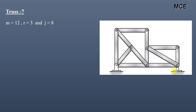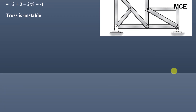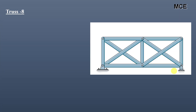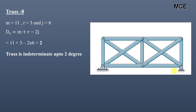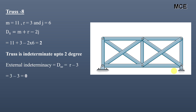For truss seven, this truss has 12 members, 3 reactions, and 8 joints. ds = −1, so this truss is unstable. For truss eight, this truss has 11 members, 3 reactions, and 6 joints. The degree of static indeterminacy equals 2, meaning this truss is indeterminate to two degrees. External indeterminacy is 0, and internal indeterminacy equals 2 − 0 = 2.